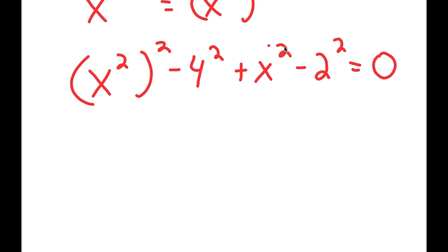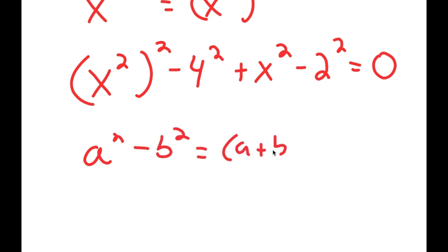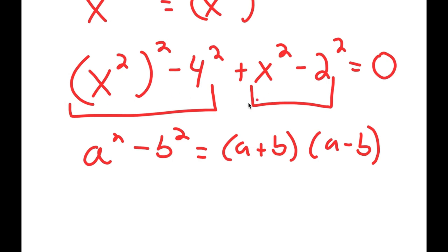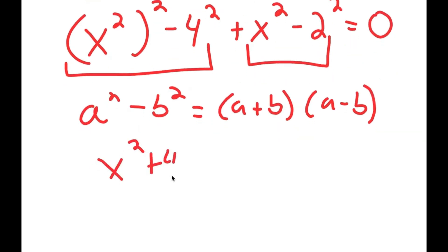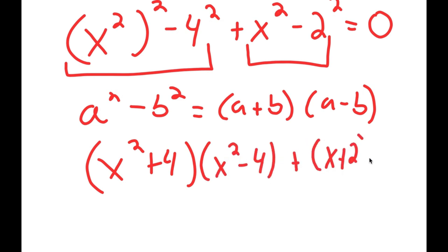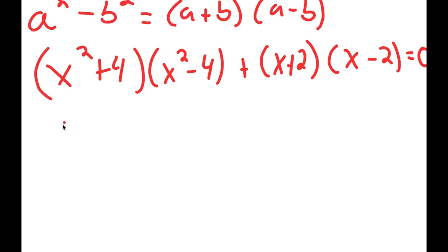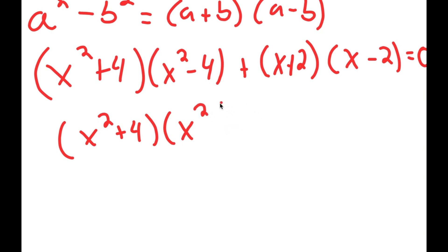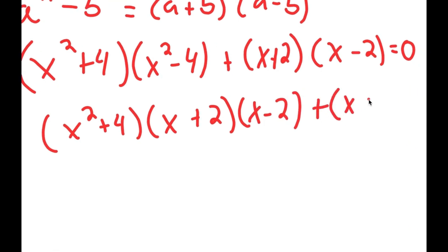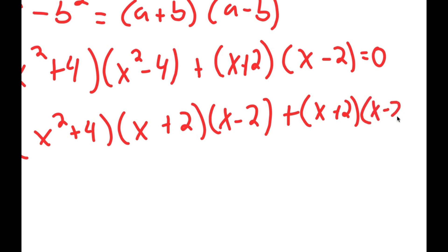Notice how everything is in the power of 2, and if I have something in the form a squared minus b squared, this is equal to a plus b times a minus b. So applying this to both groups, I get x squared plus 4 times x squared minus 4, plus x plus 2 times x minus 2 is equal to 0. We can use this property again on x squared minus 4 by rewriting it as x squared minus 2 squared, which equals x plus 2 times x minus 2.